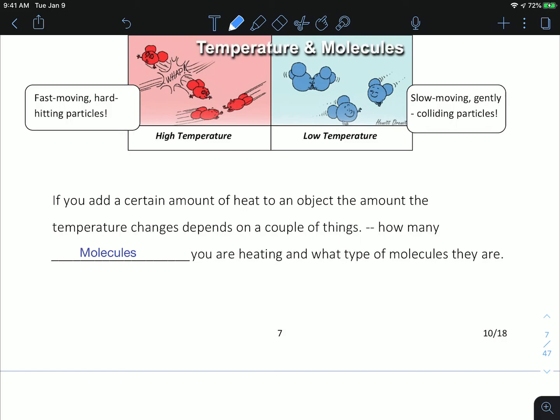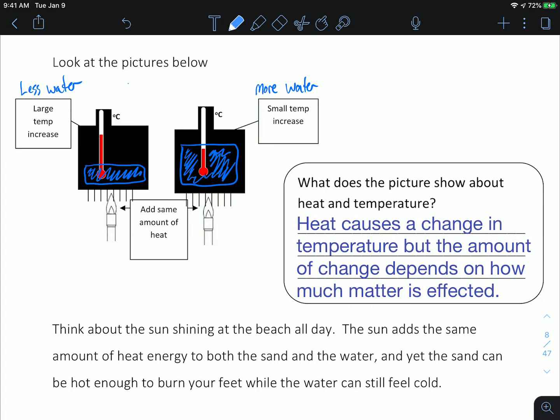If you add a certain amount of heat to an object, the amount the temperature changes depends on a couple of things - it depends on how many molecules you're heating and what type of molecules they are. We all know this probably from baking. You can wear an oven mitt and stick your hand in an oven that normally would be too hot to touch. If you don't wear the oven mitt and just use your skin, your skin would get a burn. But if you wear an oven mitt, even though it's the same amount of heat in that oven, the heat affects the oven mitt differently than it affects your own skin. Here's a picture that didn't print very well, so I've drawn a little bit of a repair. There should be some water in this picture - one container that looks like this and one container that looks like that. The container with more liquid in it will have a smaller change in temperature.